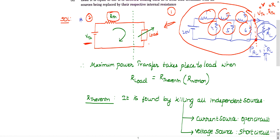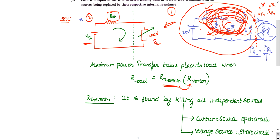Maximum power will transfer to the load only when the load resistance is equal to the Thevenin resistance. Thevenin resistance is the equivalent of all those resistances in the network. So load resistance equals source resistance, but since there are multiple resistances, we use their Thevenin equivalent.